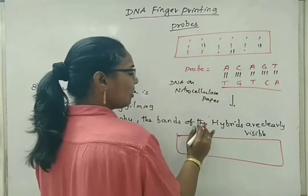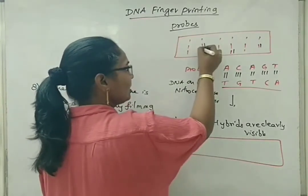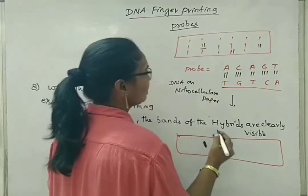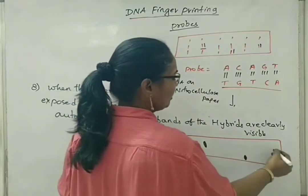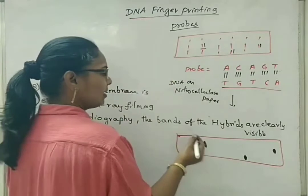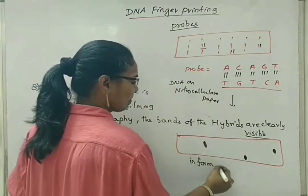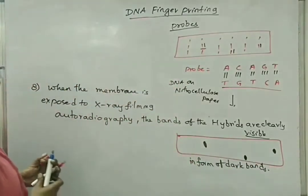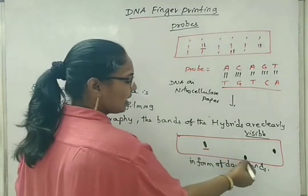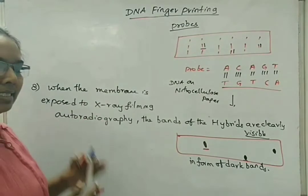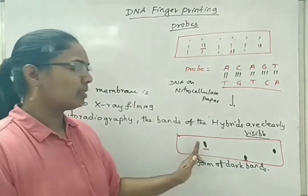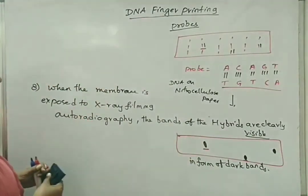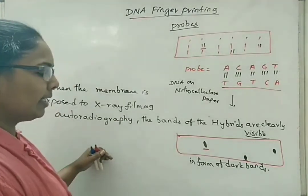After exposing to X-ray filming, where hybridization has occurred, this appears dark in color as clearly visible bands — dark bands. We can then compare whatever strands are present to the unknown sample given for the test, and analyze whose genetic material it is and identify that individual.